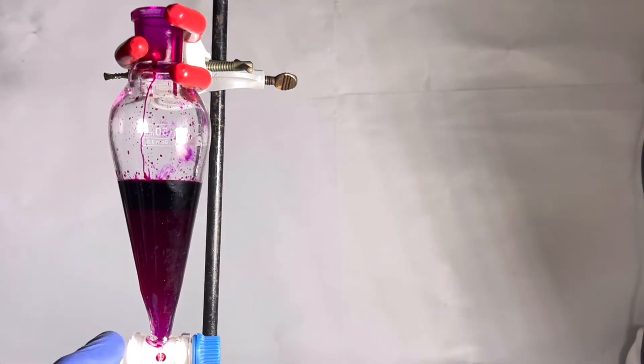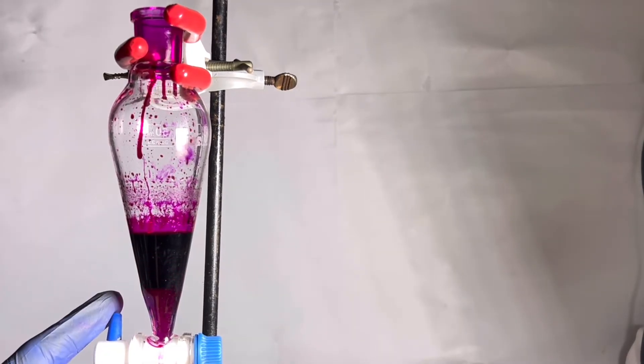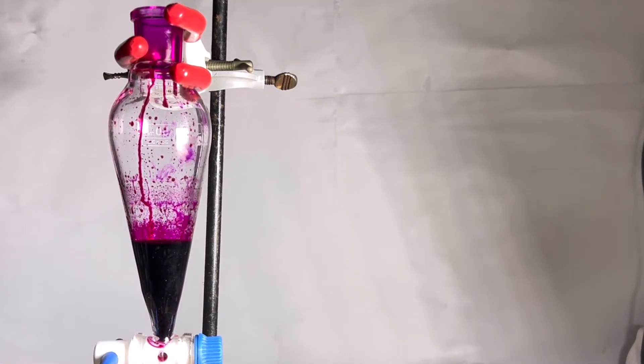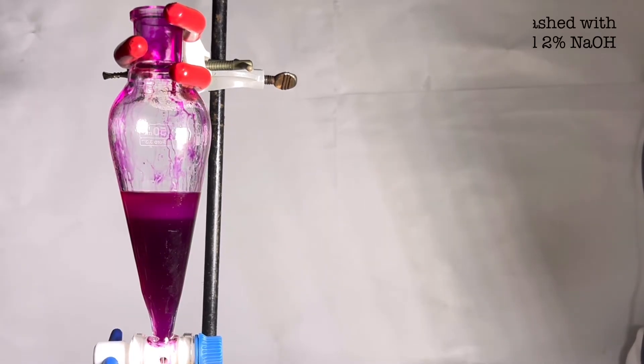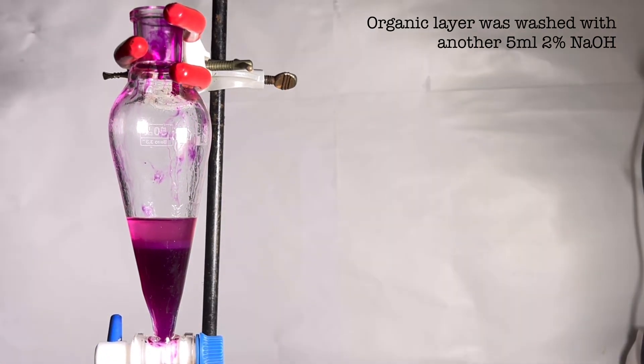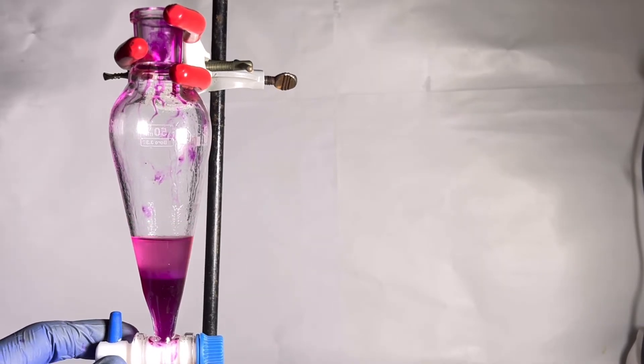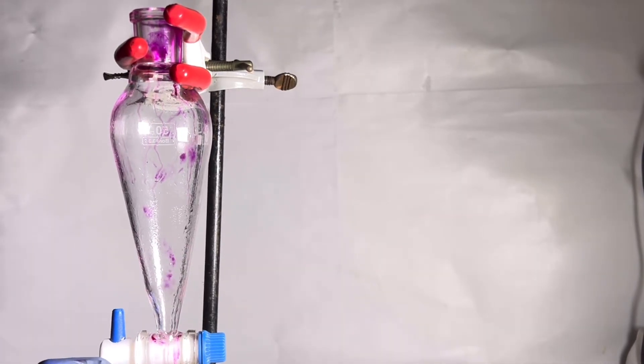The bottom organic layer was transferred to a beaker and the aqueous phenolphthalein layer was taken in another beaker. The previous dichloromethane layer was once again transferred to the separatory funnel and rinsed with another 5 ml of 2 molar sodium hydroxide solution. This time the color is much lighter. I don't show it in the video but after adding each solvent, the separatory funnel is capped and thoroughly shaken with venting in between to release the internal pressure.